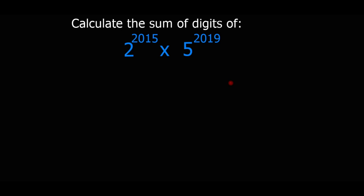This problem says calculate the sum of digits of 2 to the exponent 2015 times 5 to the exponent 2019. This number is very big, so it might be difficult to find the sum of digits. We know that the digits are the numbers from 0 to 9, and the sum means that we add them.